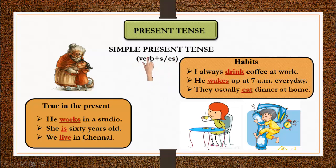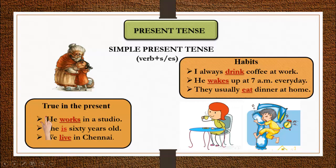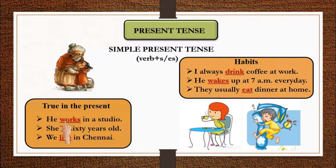In simple present tense, the verb format uses the base verb or adds 's'/'es'. We use simple present tense for current states and facts. For example: 'He works in a studio.' 'She is 60 years old.' 'We live in Chennai.' Notice in 'works,' there is the verb format with 's' added.